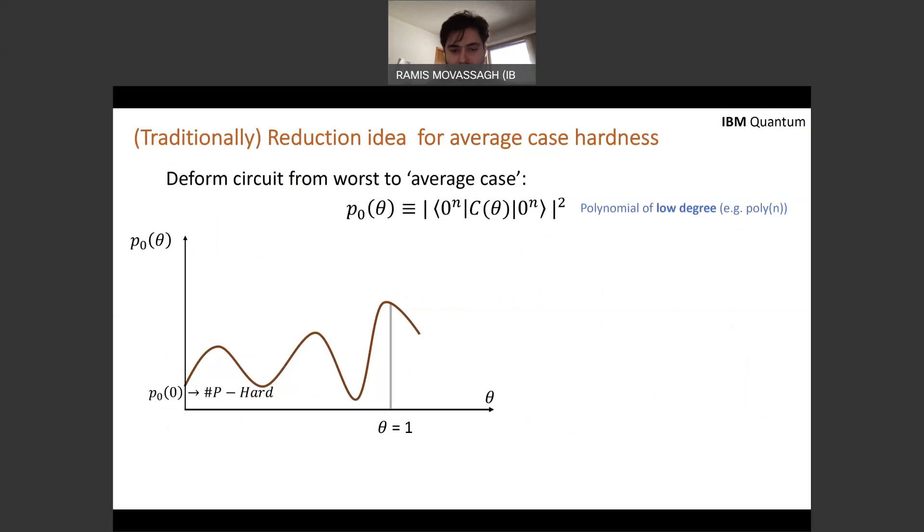Suppose for the sake of argument, I haven't told you what kind of a path to choose. And suppose for the sake of argument, I can construct a path that would result in the probability being a polynomial of low degree. It just happens that, you know, we get a polynomial of low degree. Actually in this original work, MOV20, I showed that actually polynomials are not sufficient. We need to use rational functions.